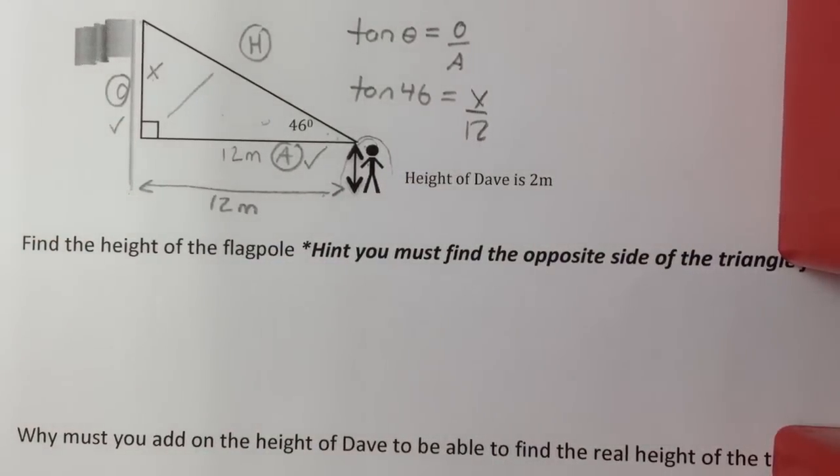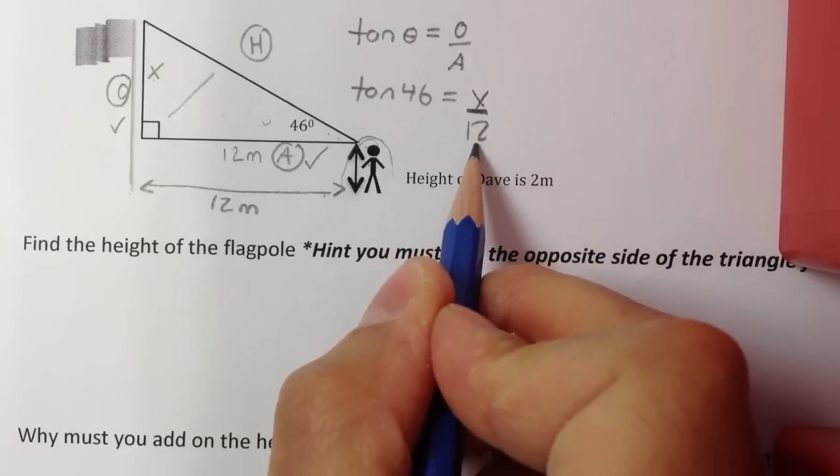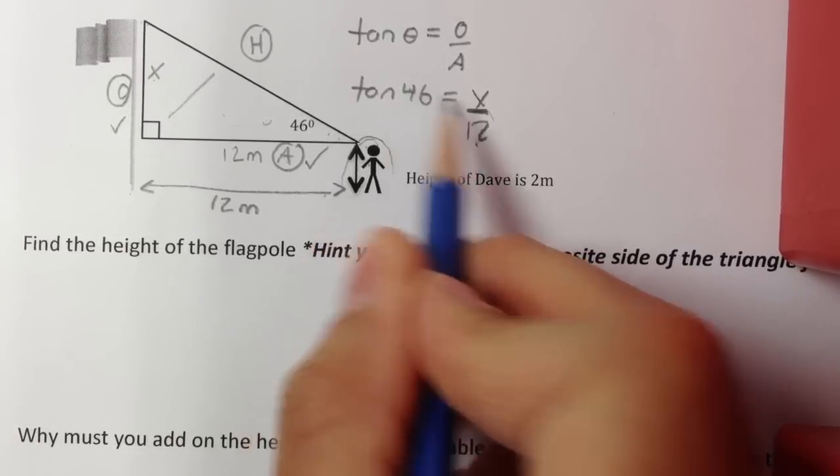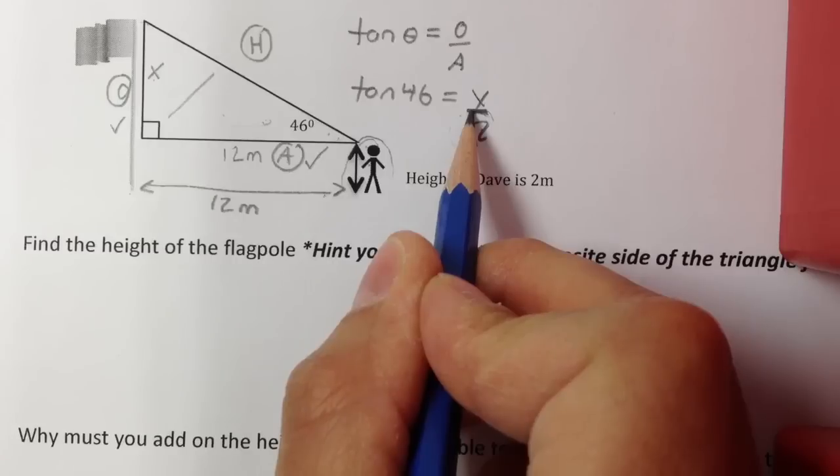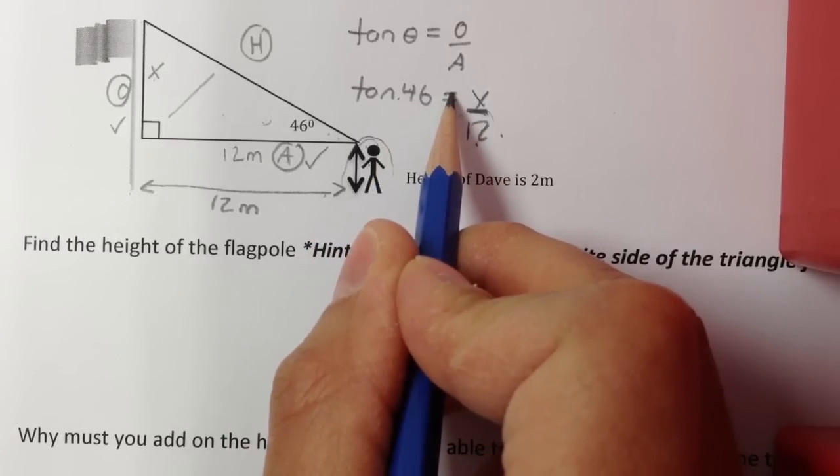Okay, this is an easier one. You're just going to be solving by multiplying. Because it's dividing 12 here, if I bring this 12 up to the other side, it'll do the opposite. And the opposite of division is multiplication. So you're just going to go tan 46, bring the 12 up, and times it.